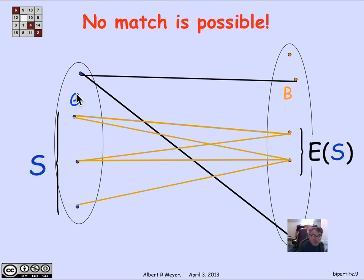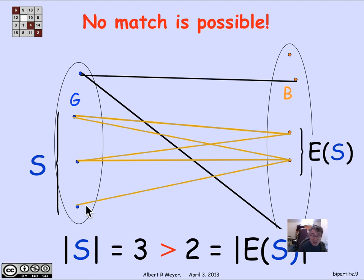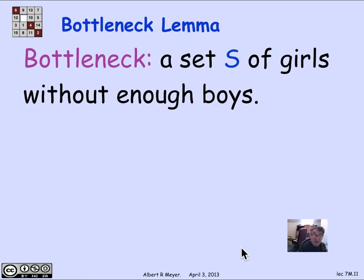More generally, if you have a set S of girls on the left and you look at the image of S under the edge relation — that is, E(S) — which is collectively the set of all boys compatible with one or more girls in S, then whenever the size of S is greater than the size of E(S), you are bottlenecked and cannot possibly find a match. In the previous example, S was three and E(S) was two; because S was greater than E(S), we were bottlenecked. The definition of a bottleneck is a set S where the size of S is greater than the size of its image E(S).